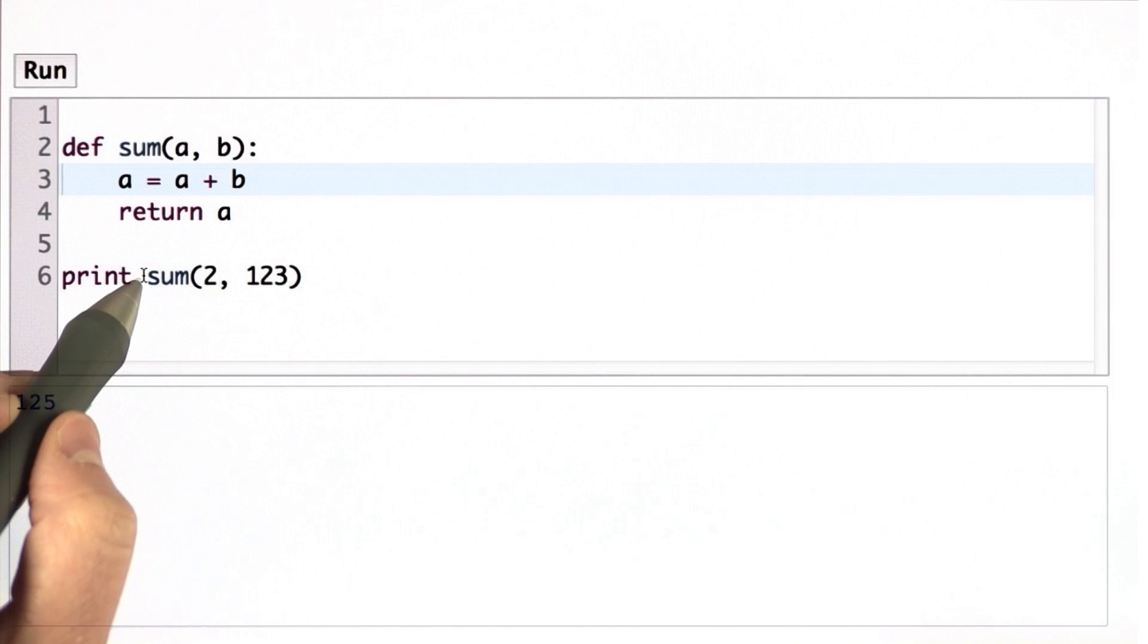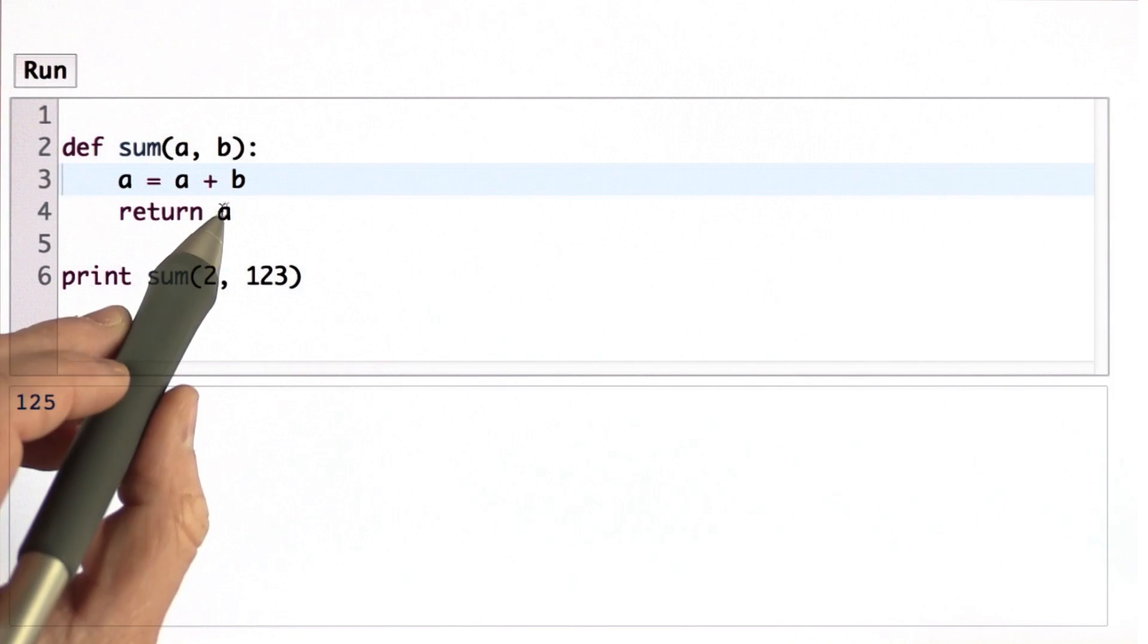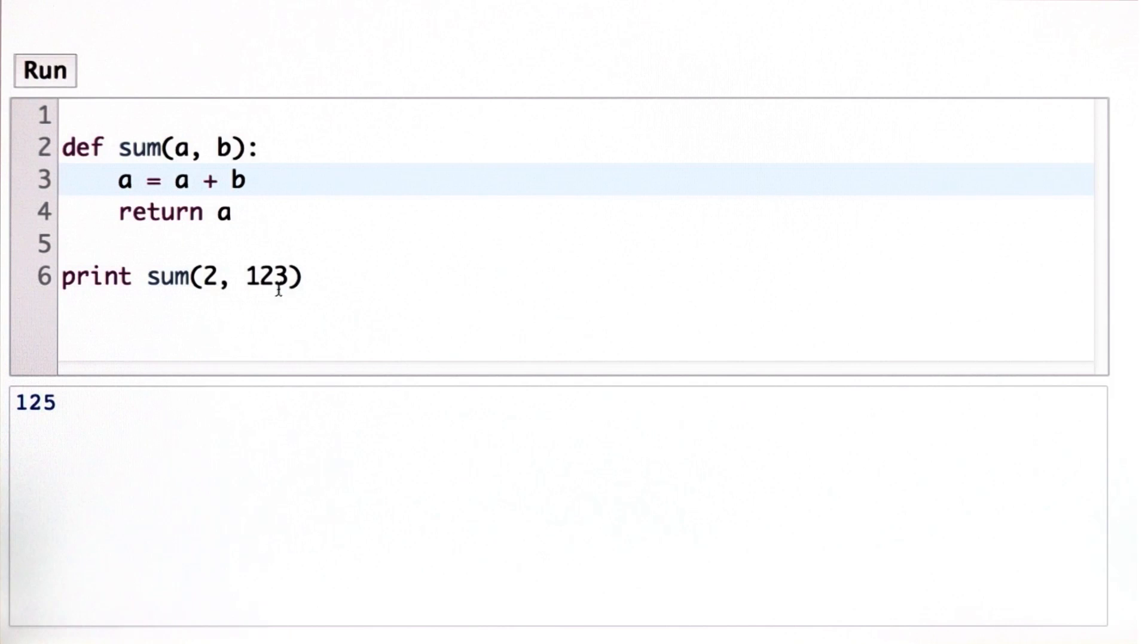Because the output of sum is what's returned here, which is the result of a at this point, which is 2 plus 123.